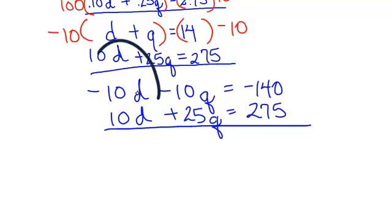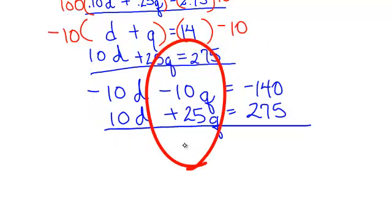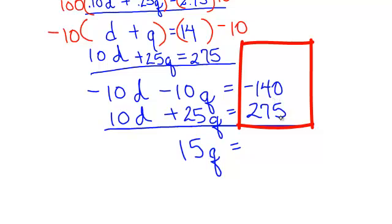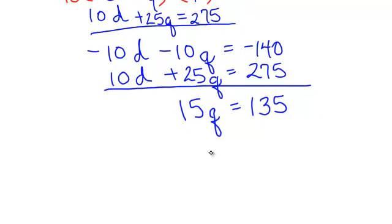Let's do some eliminating. Add them up. A negative 10d and a positive 10d, they cancel. I planned it that way. Negative 10q and a positive 25q is a positive 15q equals negative 140 and a positive 275 is a positive 135. And you know what to do now. Divide both sides by 15. Our q will equal 9.